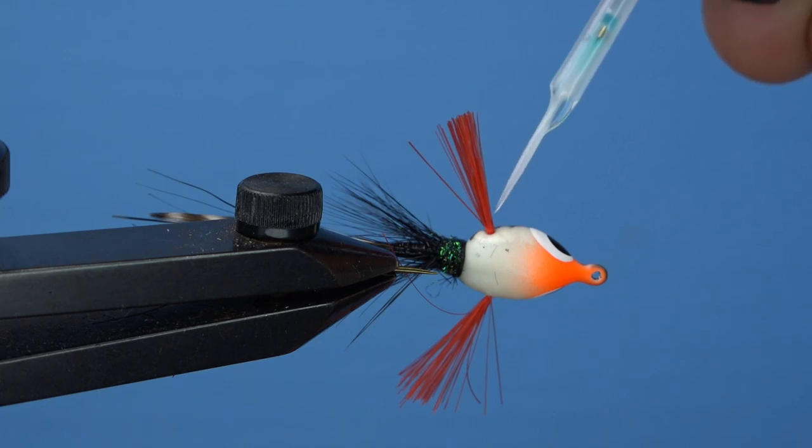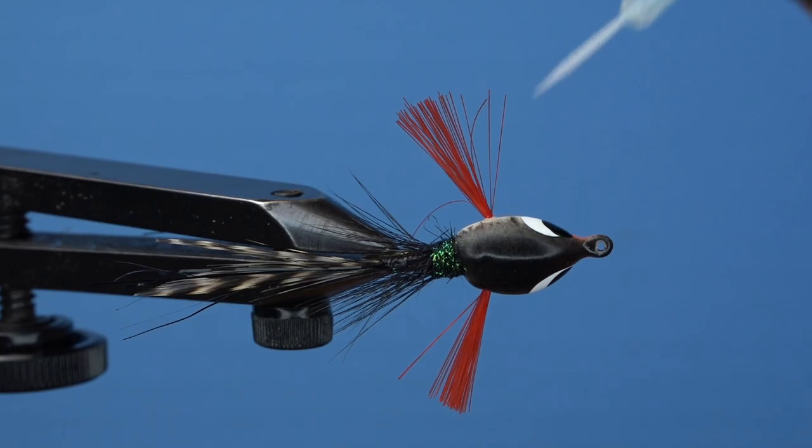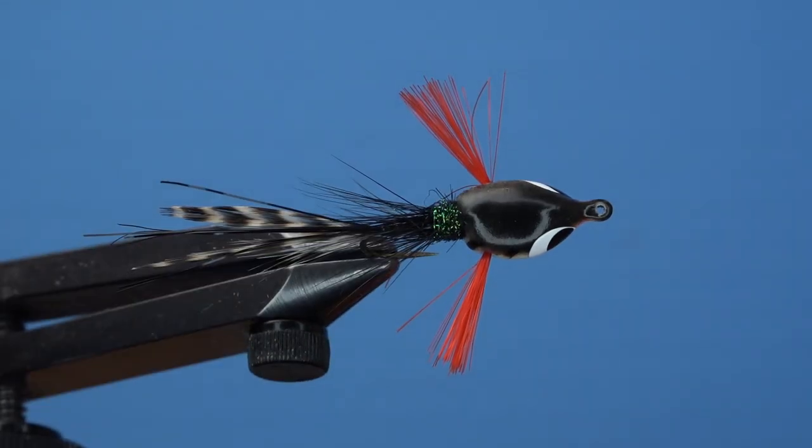Now to secure the fish hair in place, just use a little bit of UV resin at the entry point on either side and then hit it with the light to make it solid.